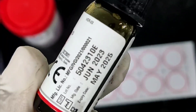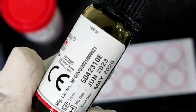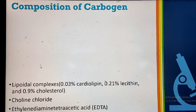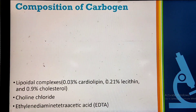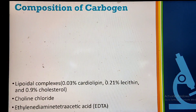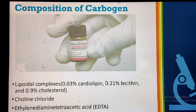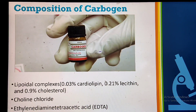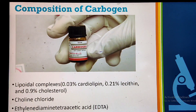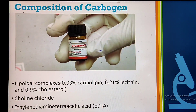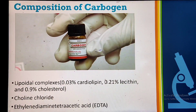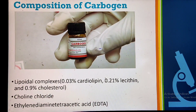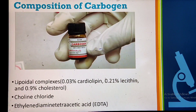This is the carbon antigen which we get in 5 ml in the test kit. We should also know about its composition. Carbogen is made of lipoidal complexes which contain 0.03% cardiolipin, 0.21% lecithin, and 0.9% cholesterol. It also contains choline chloride to eliminate the need to heat-inactivate serum, and ethylenediamine tetraacetic acid to enhance the stability of the suspension.